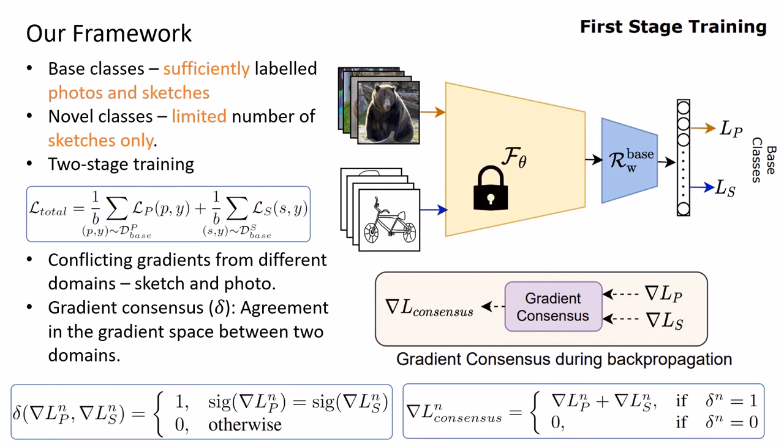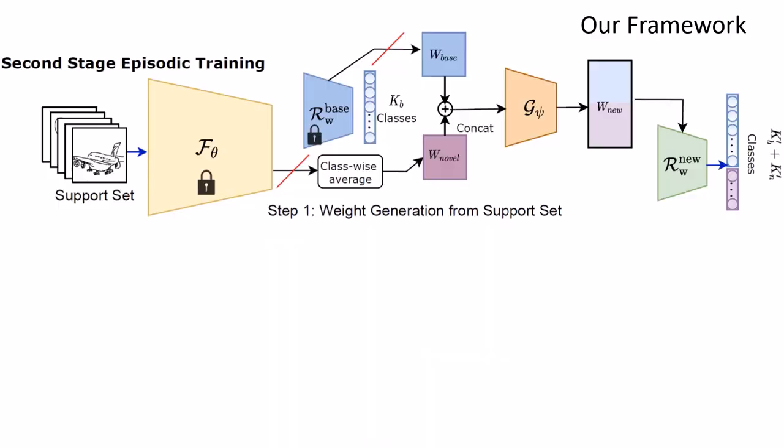After training, weights of the feature extractor are frozen for the second training stage. Two major objectives here are: Learn novel classes knowledge from fewer sketch exemplars, and not to degrade the performance of base classes while learning the novel ones.